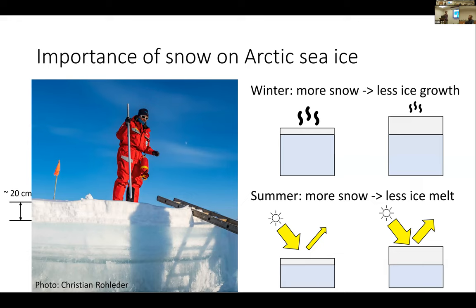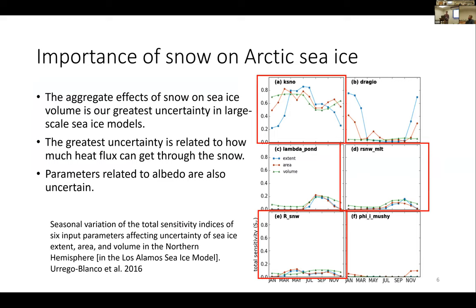Just to convince you that 20 centimeters of snow is a big deal — here's a photo of Arctic sea ice showing that we really do have very little snow on the ice at times. And there have also been sensitivity studies using SICE, the sea ice component used in many CMIP-6 climate models — the one used at NCAR in CESM. A sensitivity study from Urego Blanco and others in 2016 showed that of the top six model uncertainties, three have to do with snow: snow thermal conductivity and parameters related to snow albedo. Notably, this sensitivity study didn't include any uncertainties related to snow redistribution, because snow redistribution isn't present in this model at all — and I'll argue that's a potentially important future step.